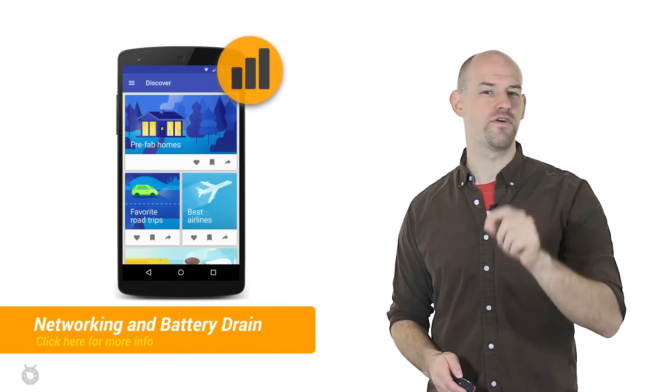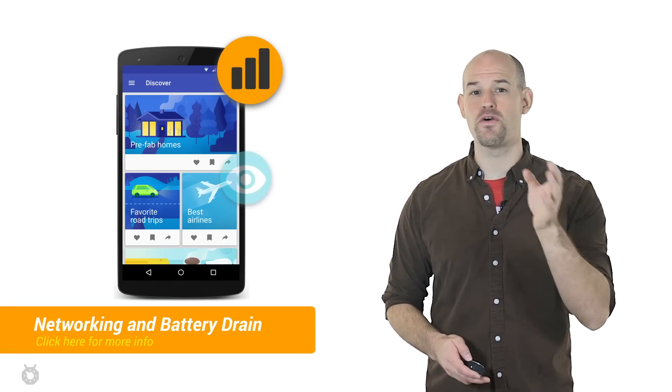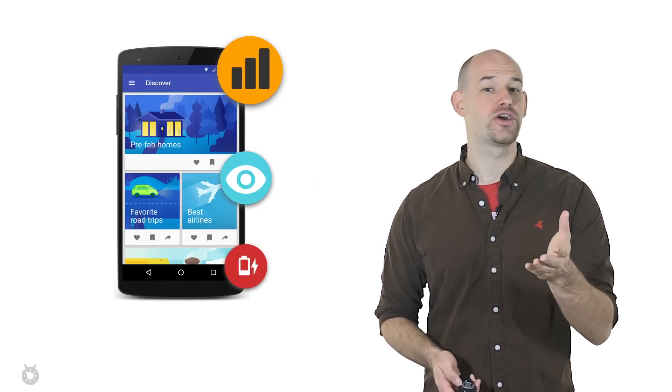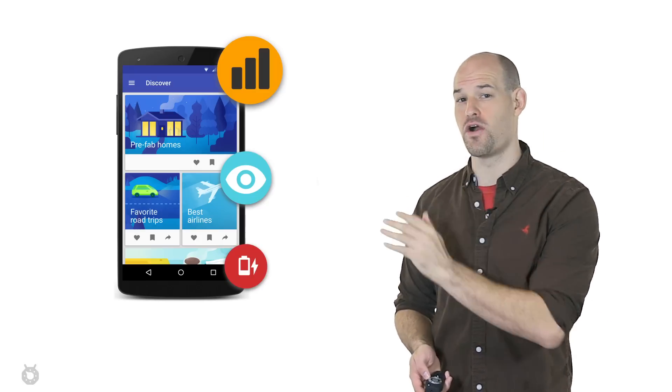And network requests are another big drain on battery. Each time you turn on your phone's mobile radio, it has to keep itself awake for a few seconds in case a response packet comes in, of course needing to draw extra battery just to stay awake. So if you're pulling an ad server every five seconds or so, you're going to be incurring the cost over and over and over again.